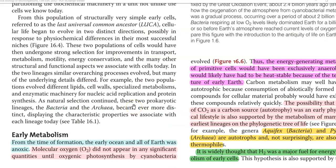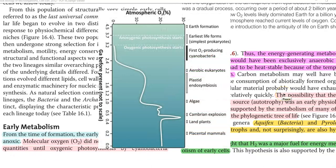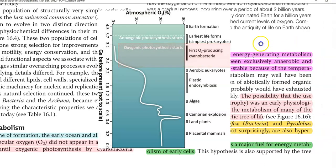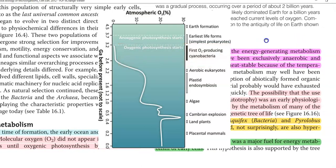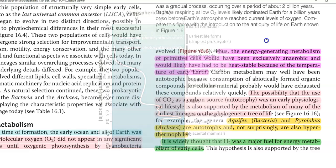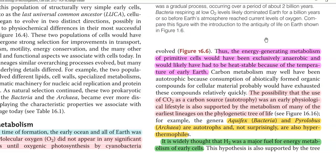From the time of formation, the early ocean and all the earth was anoxic — that is around 4.5 billion years ago. Life started originating only after 3.5 billion years. Molecular oxygen did not appear in any significant quantities on the earth's surface until oxygenic photosynthesis carried out by cyanobacteria became a major event in the course of evolution. Thus, the energy-generating metabolism of the primitive life would be exclusively anaerobic and would have operated under heat-stable conditions, since the temperature was very high on the earth's surface.